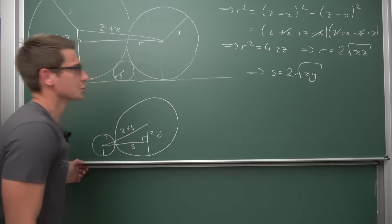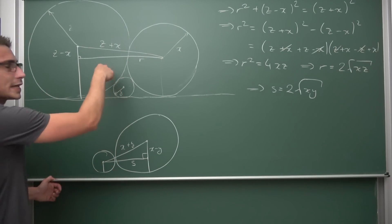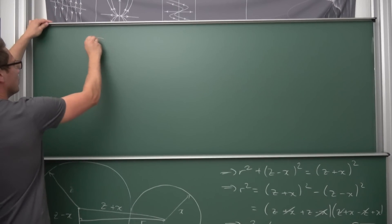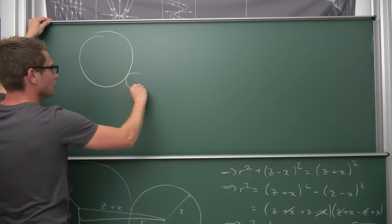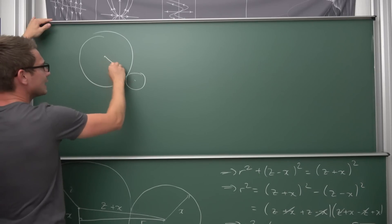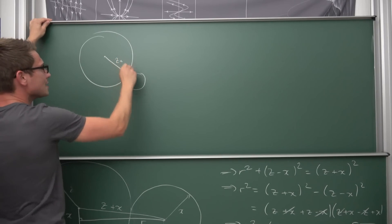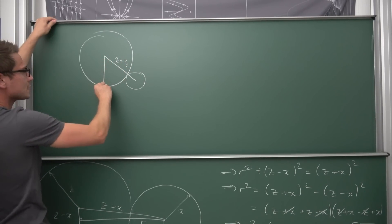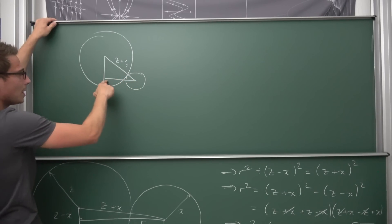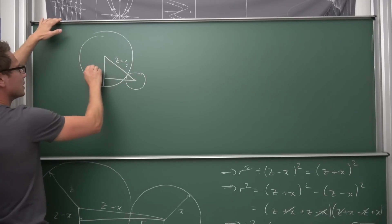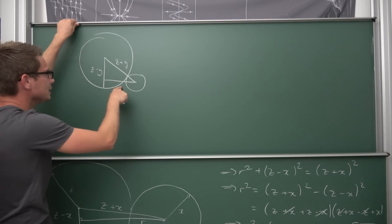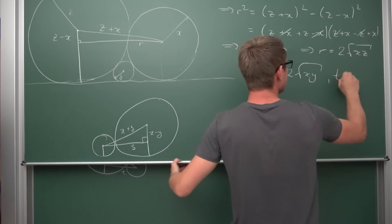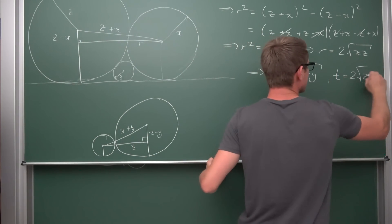You can check that the same logic holds if we take the big circle and the small circle. Connecting their centers gives z + y. Projecting downwards gives a right triangle where the short leg is z − y. We call the horizontal leg t, and going through the same logic gives t = 2√(zy).